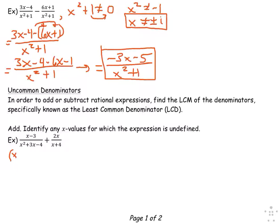The factors of negative 4 that sum to positive 3 are positive 4 and negative 1. Notice I simply rewrite that denominator in factored form right underneath that term — that helps keep from rewriting too much information. Now that everything is factored, I will state my exclusions before proceeding. I realize that negative 4, positive 1, and negative 4 again — don't write repeats.